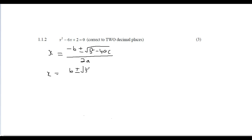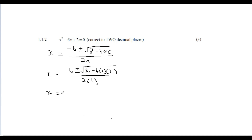Continuing the substitution: b² = (-6)² = 36, minus 4 × 1 × 2, all over 2 × 1. Pop that into your calculator and you get 3 ± √7. The question says correct to two decimal places, so press S→D on your calculator. For the positive case, x = 5.65.